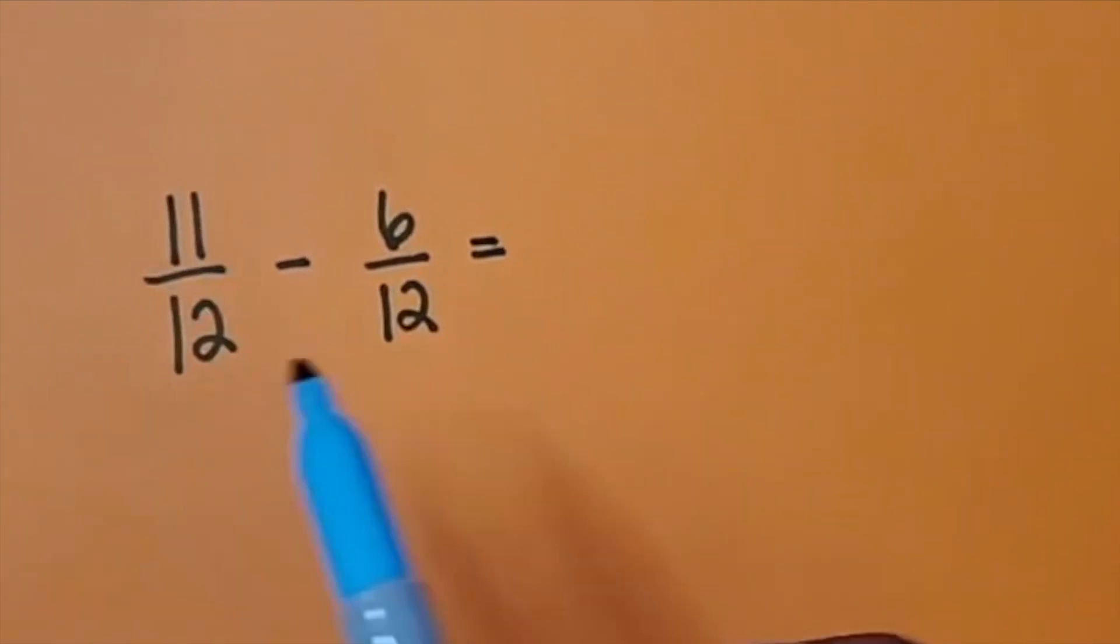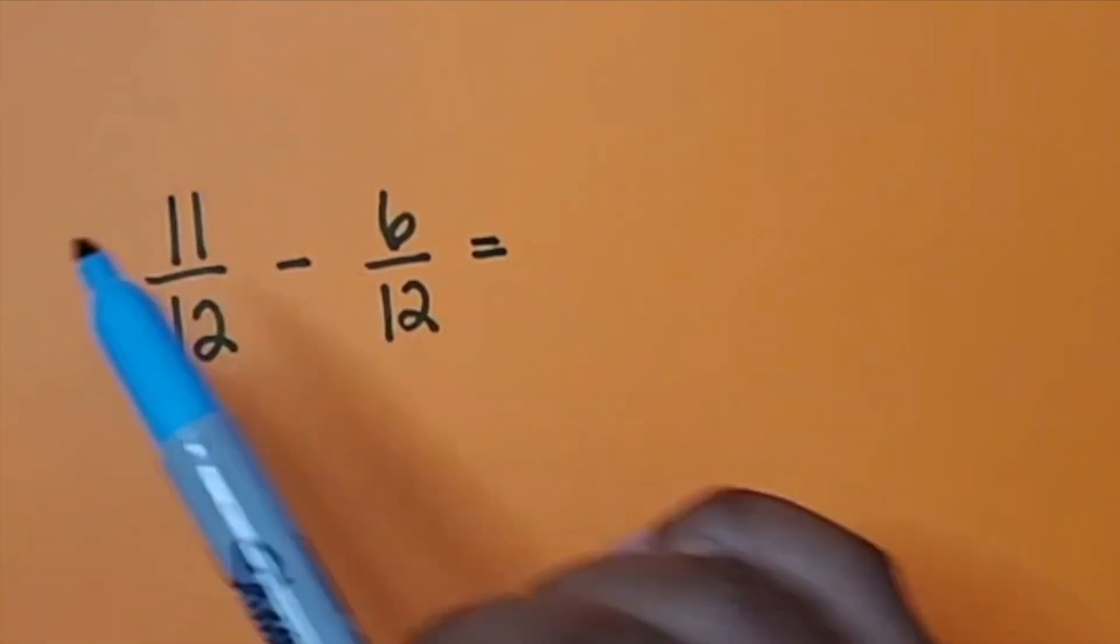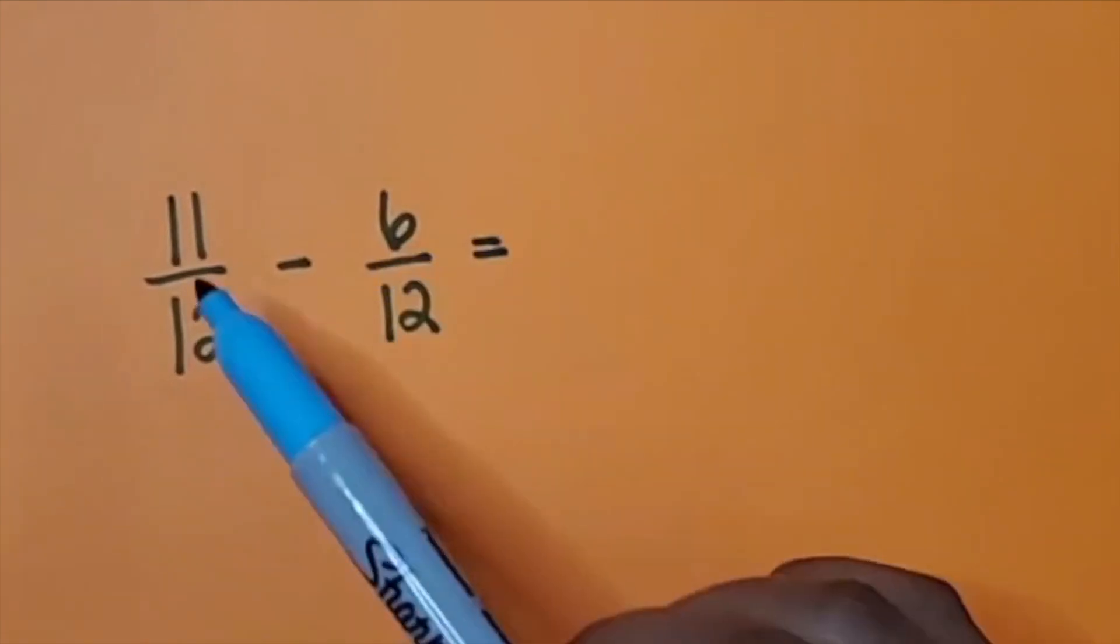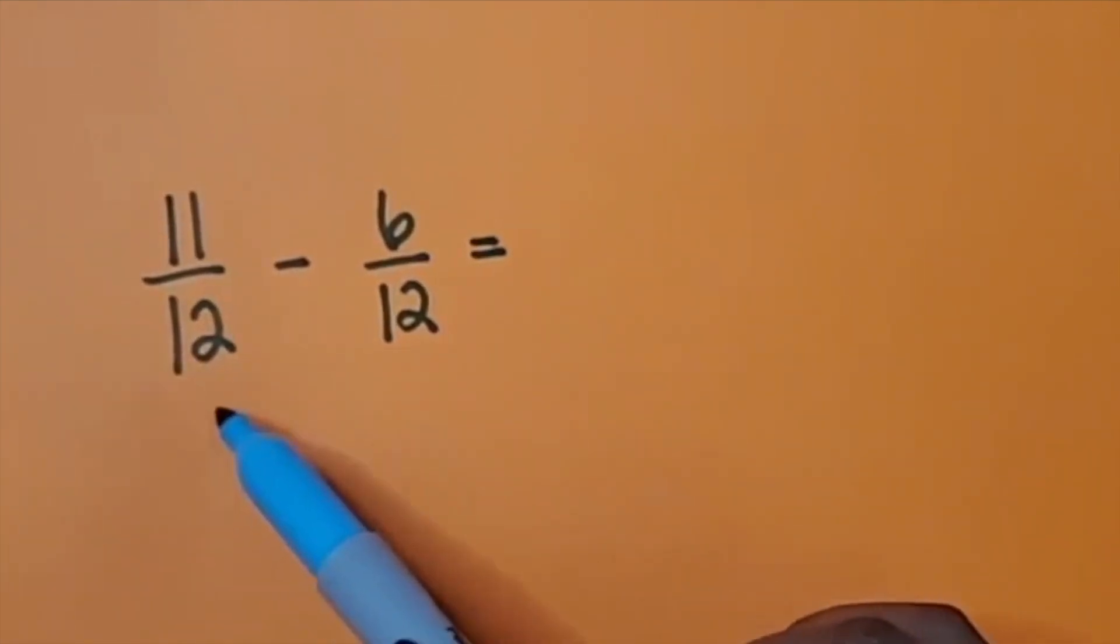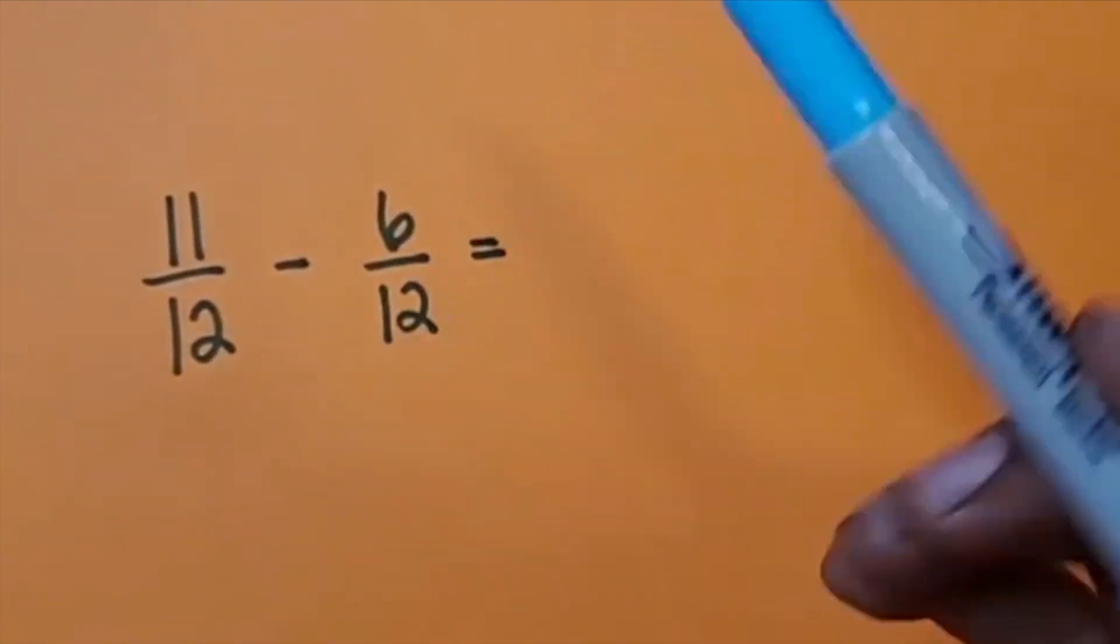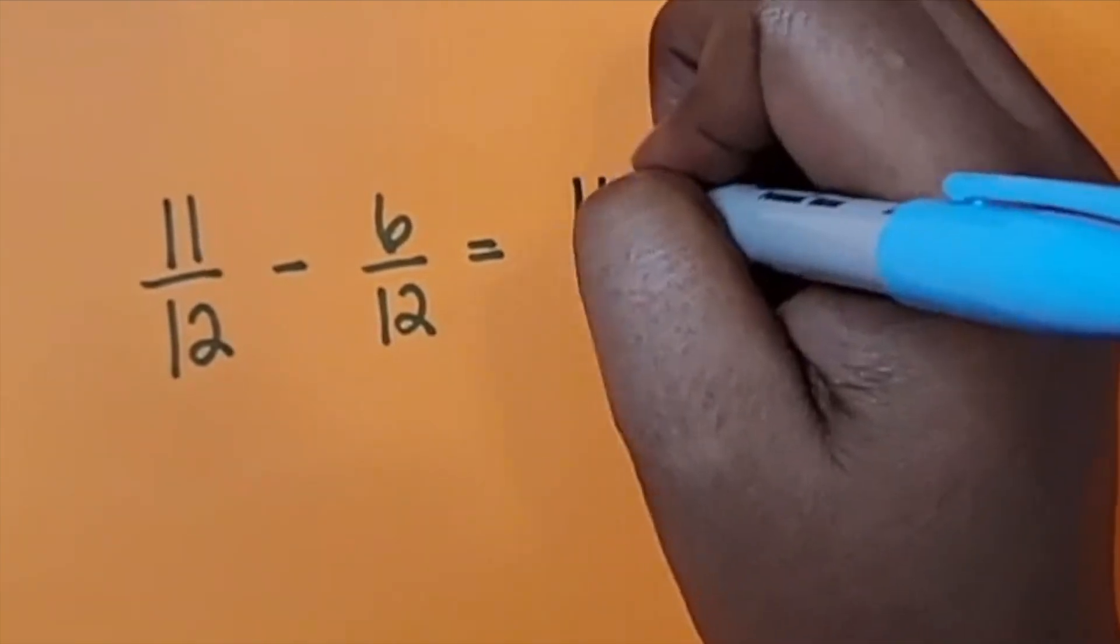We have 11 twelfths, and from the 11 twelfths, we want to subtract 6 twelfths. So I have 11 twelfths-sized pieces. I'm going to subtract 6 of those twelfth-sized pieces. So let's look at it this way.